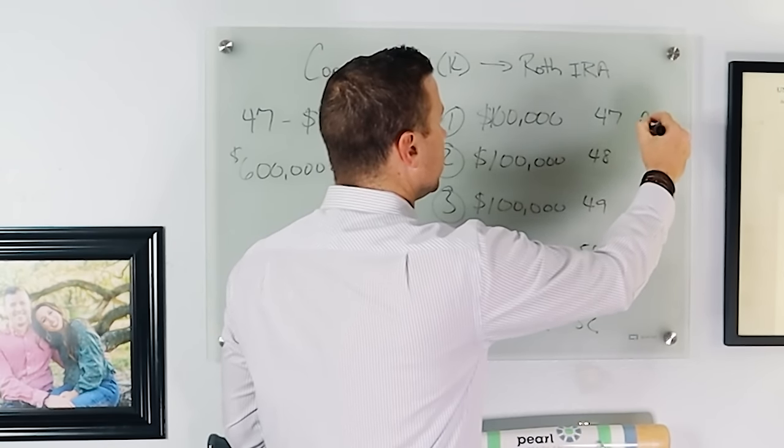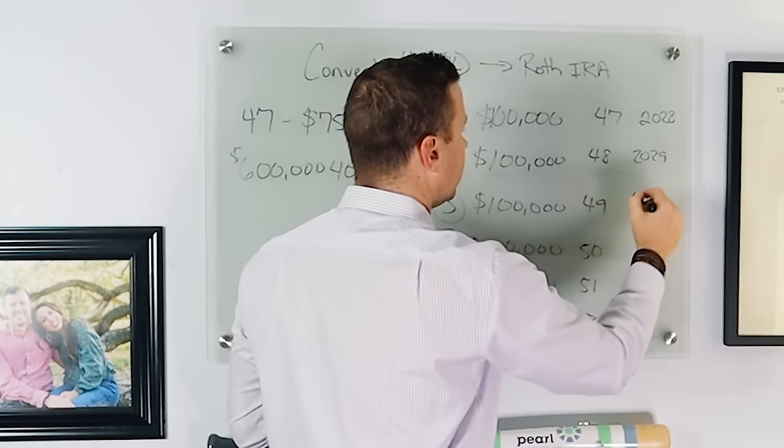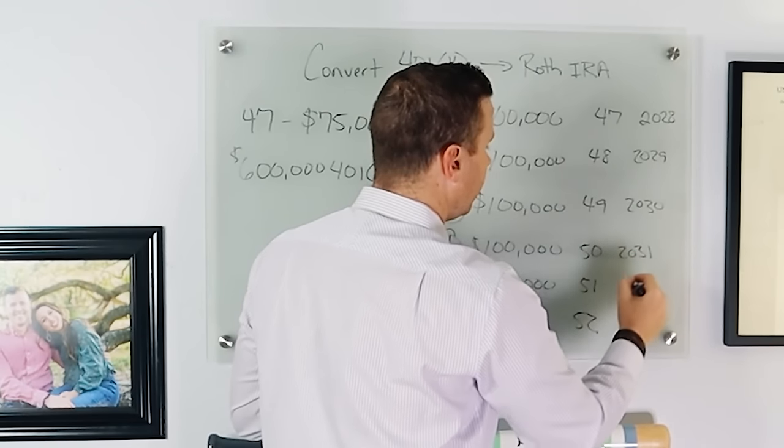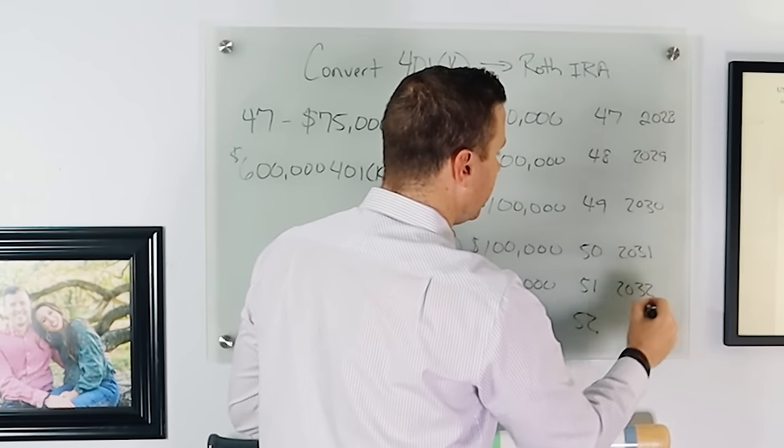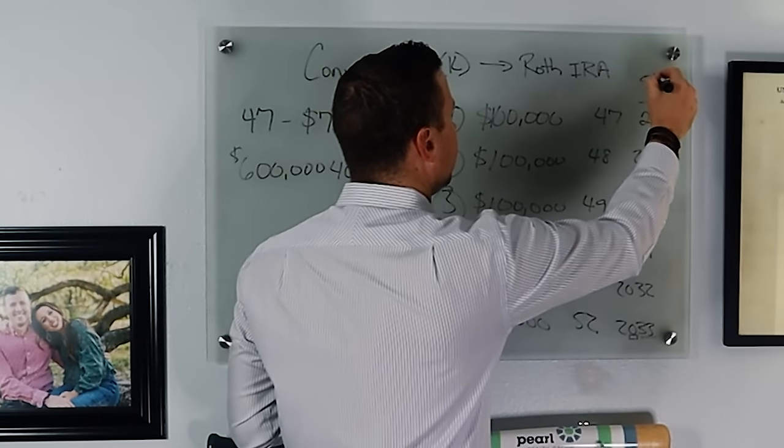So we got to wait till 2028, 2029, 2030, 2031, 2032, and 2033. That's the five-year rule.